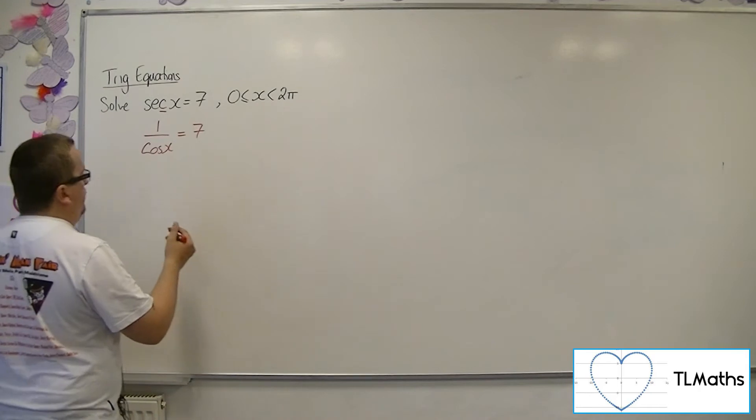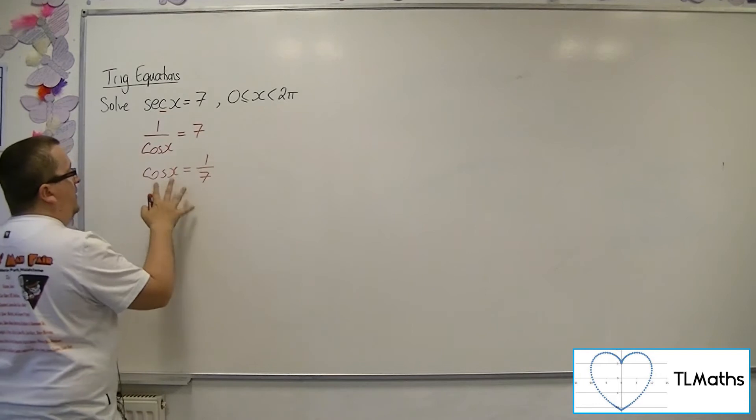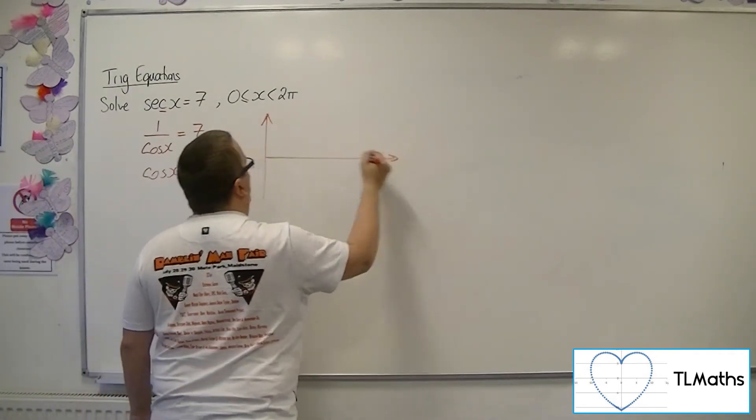If I take the reciprocal of both sides, then cos(x) equals 1 over 7. So this is the equation that we want to solve between 0 and 2π.